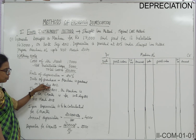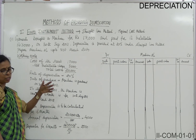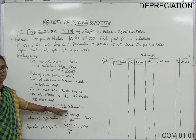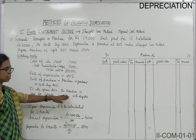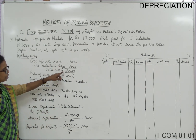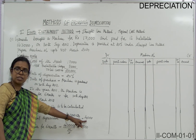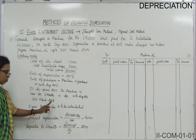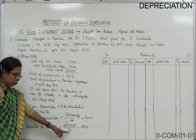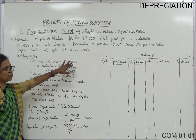The machine is purchased on 30th September 2011 and used from October to 31st March — that is 6 months in the first year. Annual depreciation is 20,000 into 20 by 100 equals 4,000. Since the machine is used only 6 months in the first year, depreciation is 4,000 into 6 by 12 equals 2,000. This working note is for understanding; you can show these calculations in the account itself.